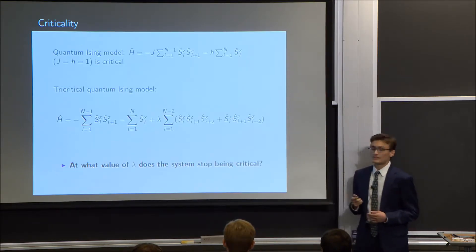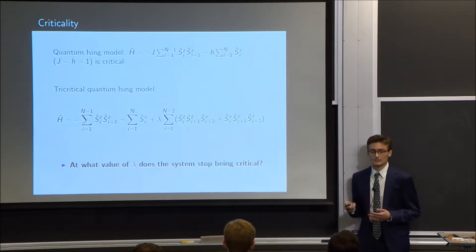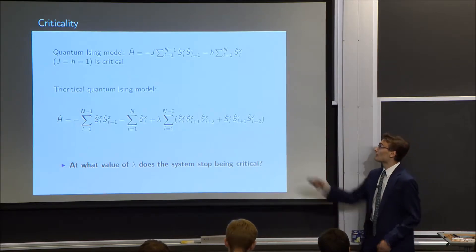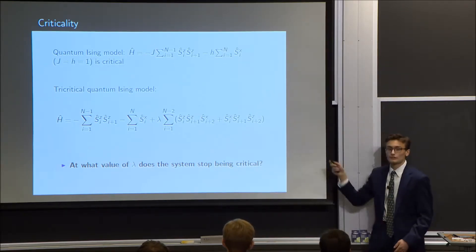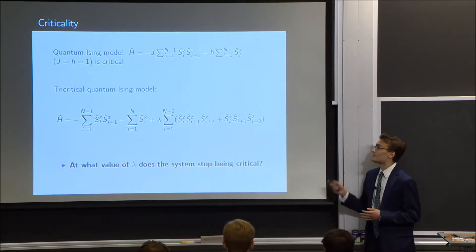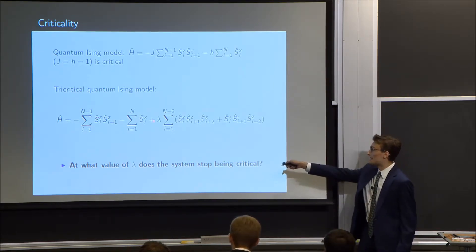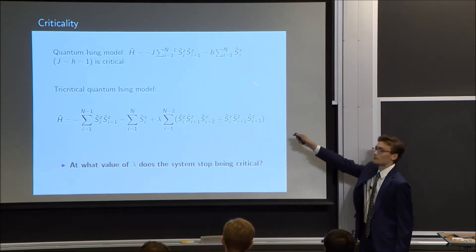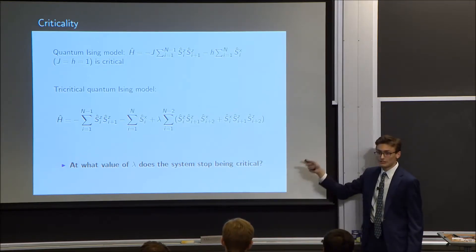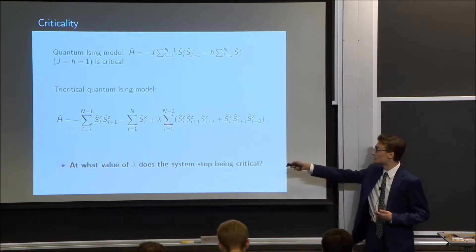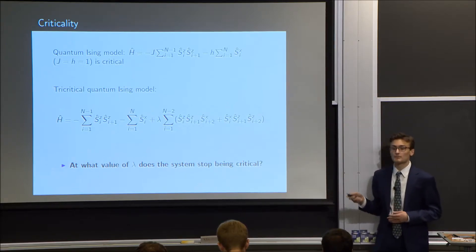The 1D quantum Ising model is very well studied, and we already know that when J and H — the parameters that quantify the relative strength of interactions in the Hamiltonian — are the same, the system is critical. In the tricritical quantum Ising model, when J and H are both 1 and lambda is 0, those two terms are the same as the base Ising model, so lambda equals 0 represents a critical system. Our question is: how far can we push lambda above 0 before the system stops being critical?